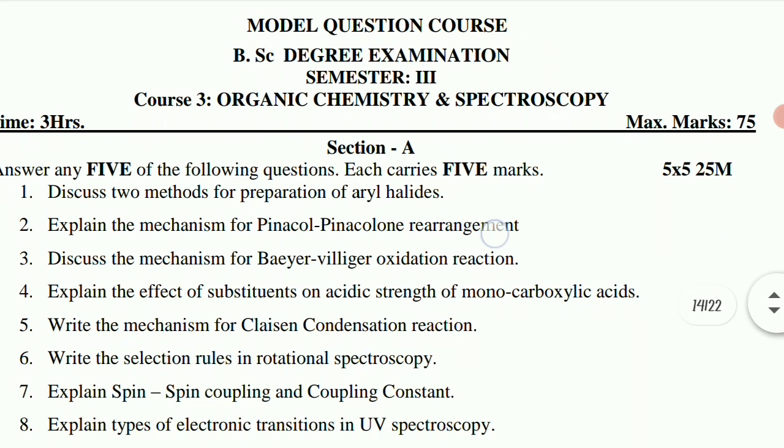Sixth one: write the selection rules in rotational spectroscopy. Seven: explain spin-spin coupling and coupling constant. Eight: explain types of electronic transitions in UV spectroscopy. So shorts are confirmed and repeated questions.